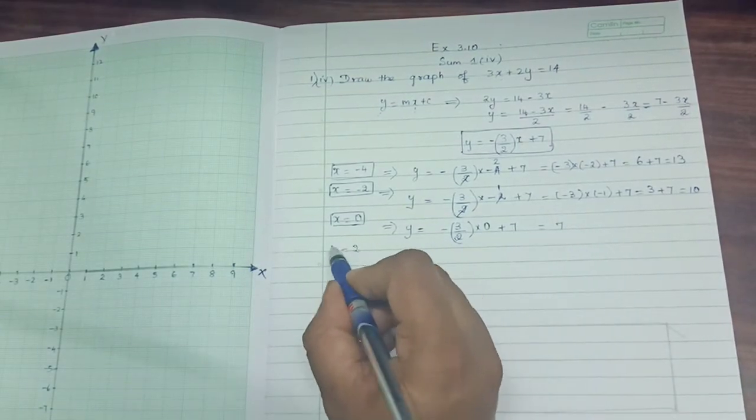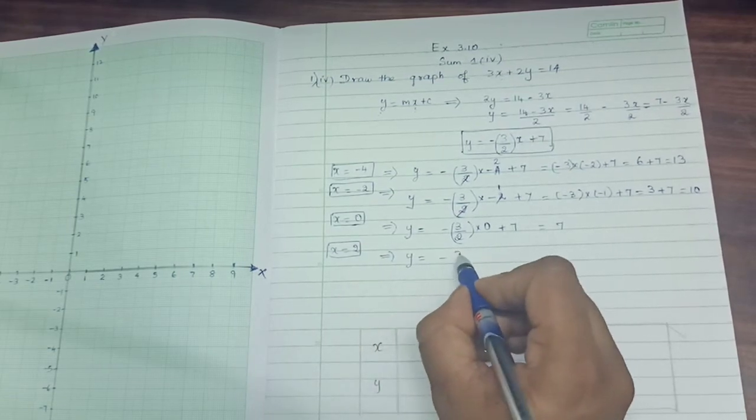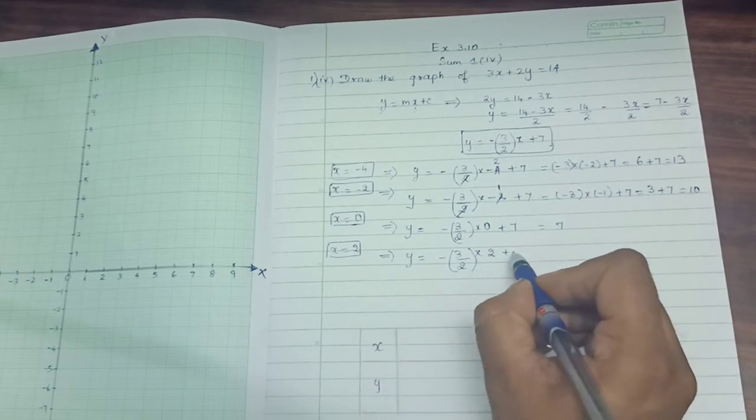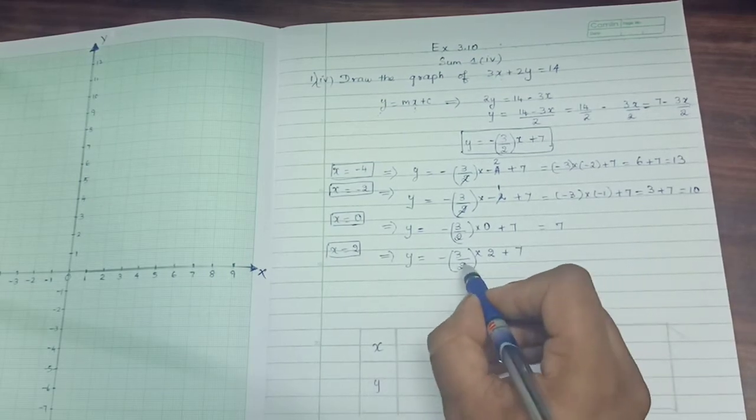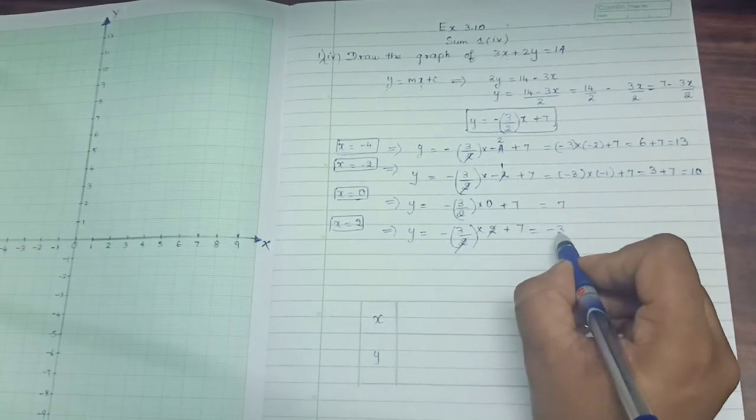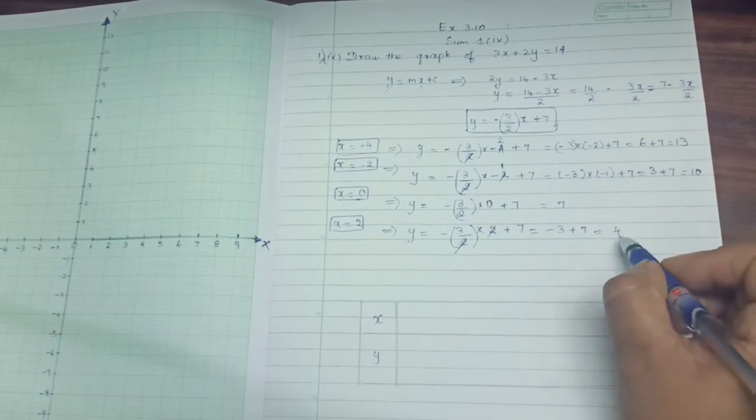x equals 2. That means y equals minus 3 by 2 into 2 plus 7. This 2 will get cancelled. Minus 3 plus 7. It is like 7 minus 3. That is 4.